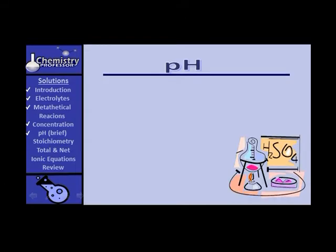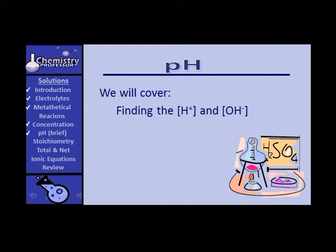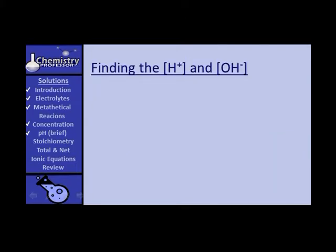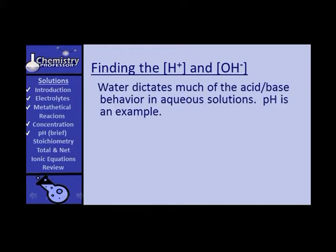We're going to deal now with a limited section on pH. In this we will cover finding the hydrogen ion concentration and the hydroxide ion concentration, finding the pH and pOH, and the role that water plays in all of this. Note that the brackets are a shorthand term for the concentration of whatever is in the bracket. Water dictates much of the acid-base behavior that occurs in aqueous solutions, and pH is an example.